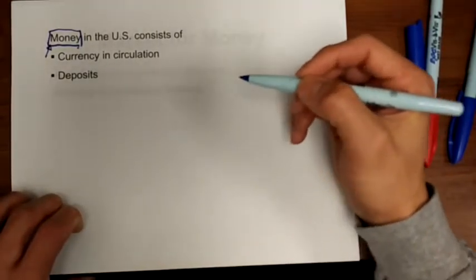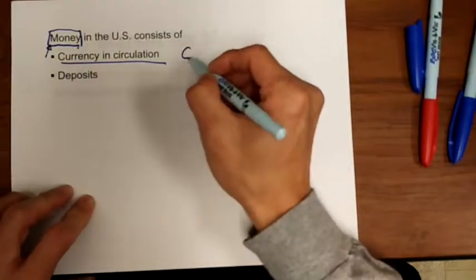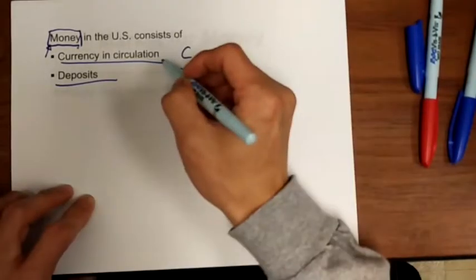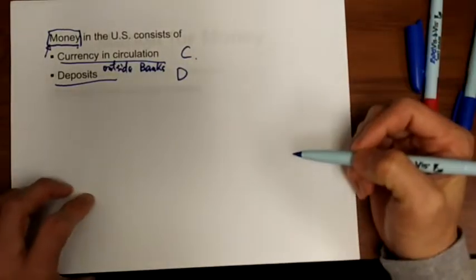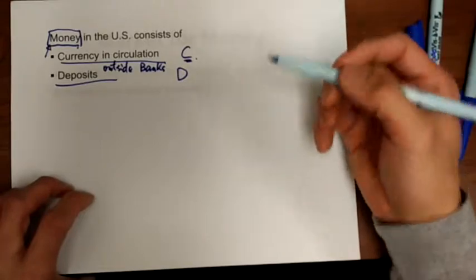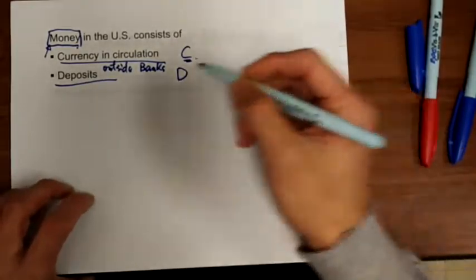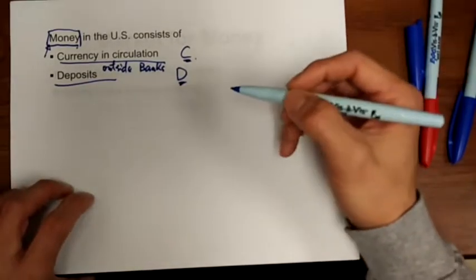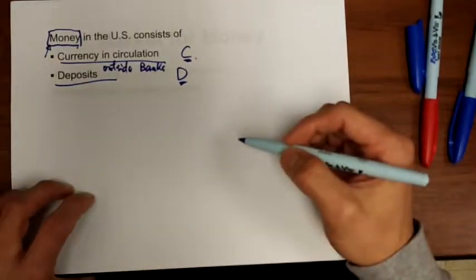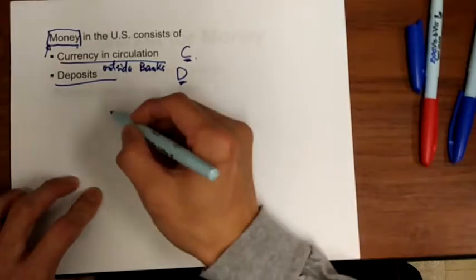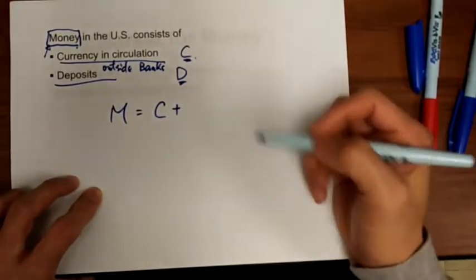That is, you can use it right away to buy things. So money in this chapter is defined in the United States as currency in circulation plus deposit. Currency in circulation is currency outside the banks — currency in your pocket — so that's 100% liquidity, basically cash. Deposit is your checking account deposit. You can use your Visa check card; if you have a balance, you can use it to buy things directly, so that is also 100% liquidity. Therefore, money is defined as currency outside the bank plus your checking deposit.